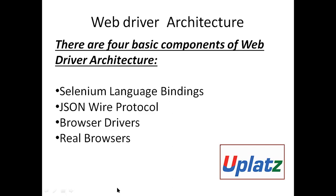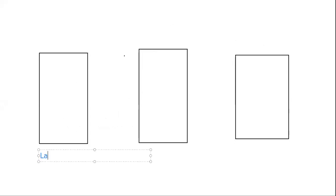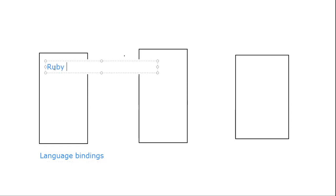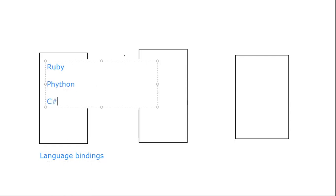Let us discuss with the help of a diagram. These are the language bindings. In this block we have different languages — like Ruby, Python, C-Sharp, and Java.